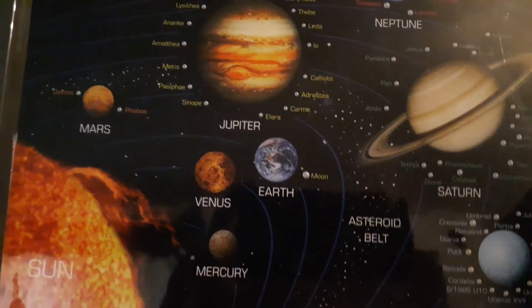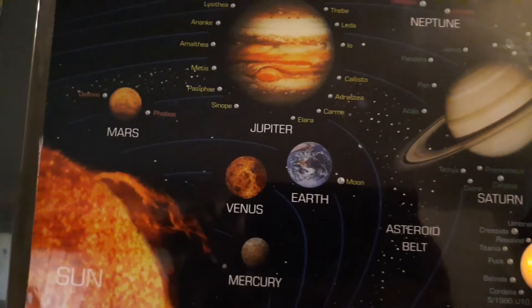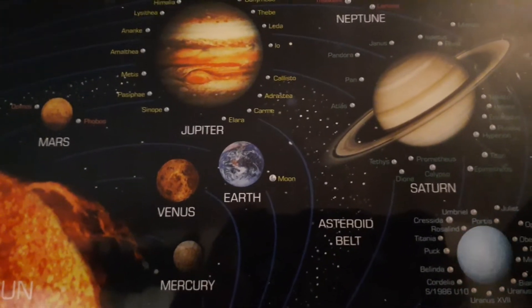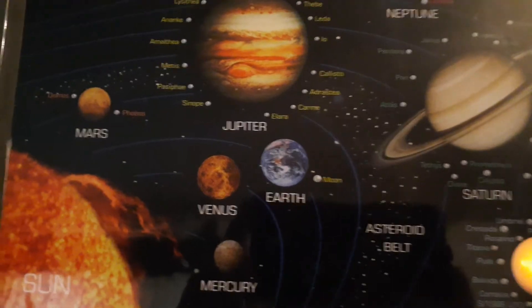Uranus is tilted on its side. One year on Uranus is approximately 84 years on Earth.